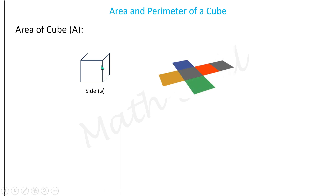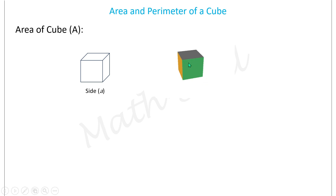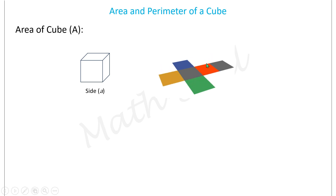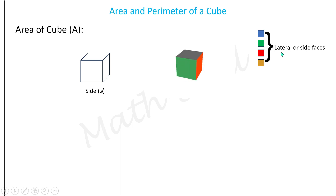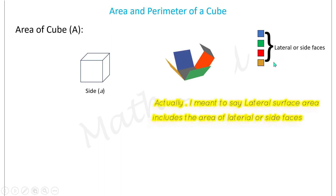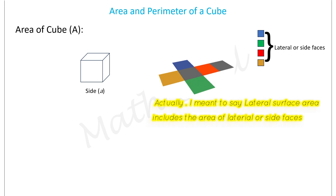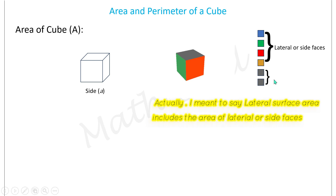On cutting open the cube, we see six different square faces. Blue, red, green, and orange are the four faces on the sides. The bottom and top surfaces are the gray-colored ones. The blue, green, red, and orange faces are called lateral or side faces because they are on the sides. The gray-colored ones are the bottom and top faces.